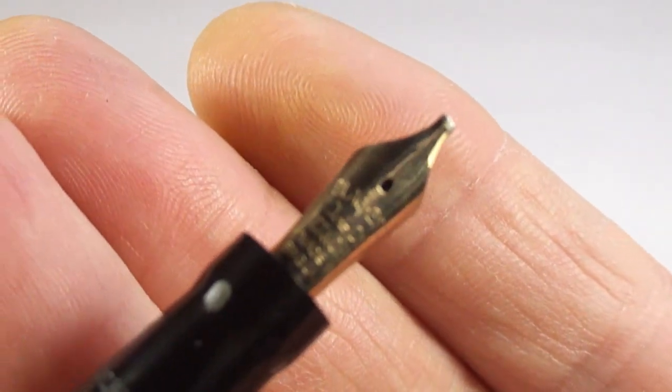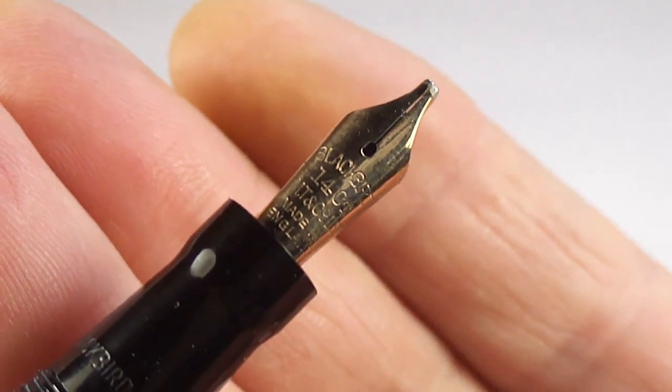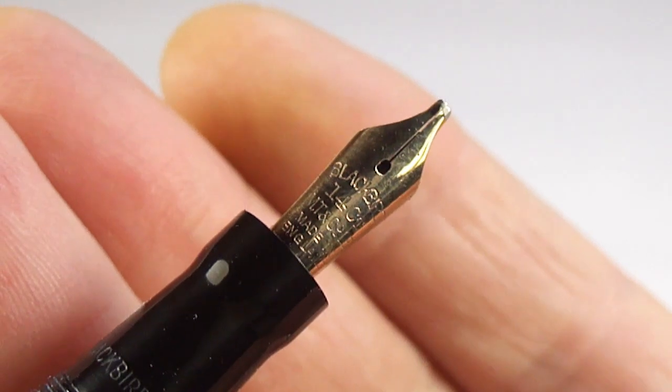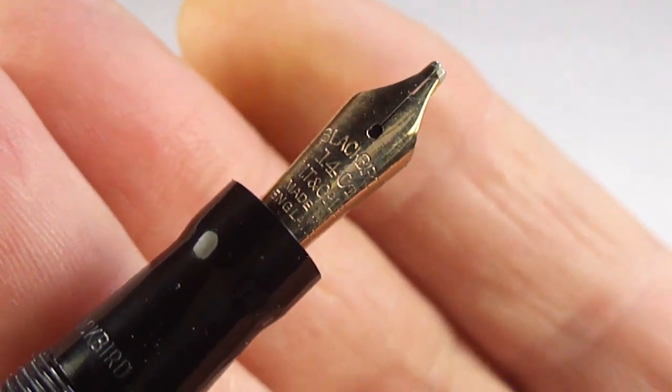Let me keep it nice and still. Let's give the pen, sorry, not the pen, the camera, a chance to focus. So we've got our Blackbird, Maybe Todd and Company, made in England, 14 carat gold nib.